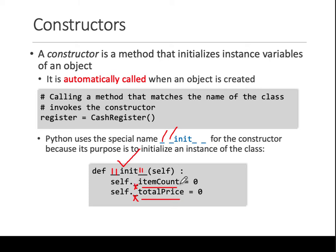item_count is a variable. When we say self.item_count equals zero, we are initializing its value to zero. Similarly, total_price is being initialized to zero. So all that's happening inside this constructor is that you're setting the values of these two variables to zero.